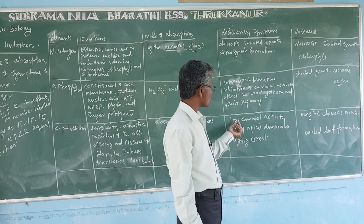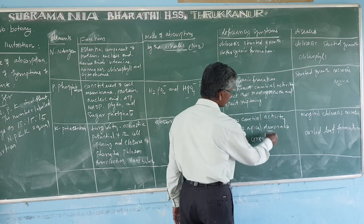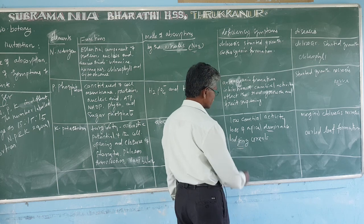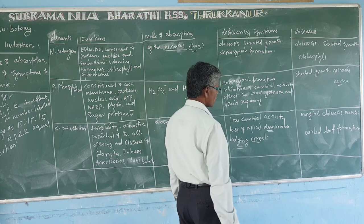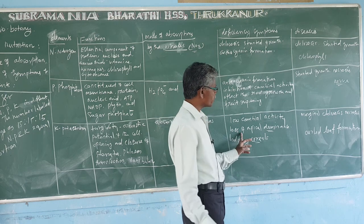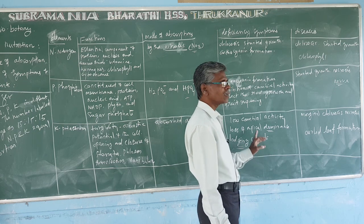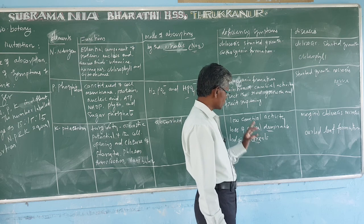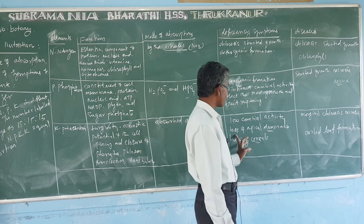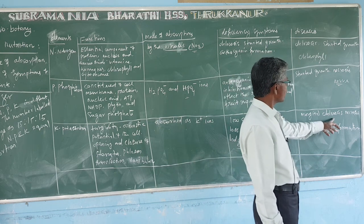Deficiency symptoms of potassium include low cambial activity, loss of apical dominance, and lodging of cereals. Finally, deficiency of potassium also causes marginal chlorosis.